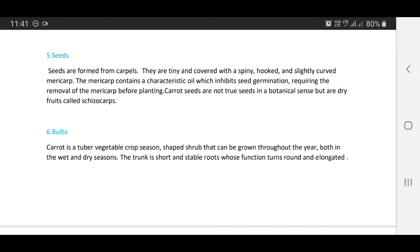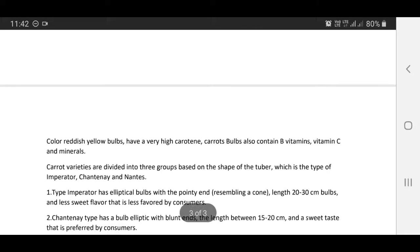Carrot sometimes called bulbous tubers. Carrot is a tuber vegetable crop that can be grown throughout the year, both in the wet and dry seasons. The trunk is short and stable. Roots which function turns round and elongated. Color reddish yellow bulbs have a very high carotene. Carrot bulbs also contain vitamin B, vitamin C and minerals.